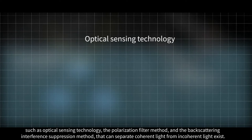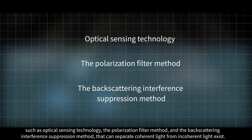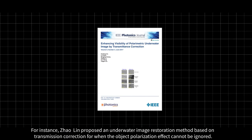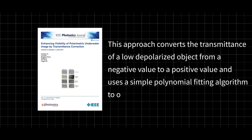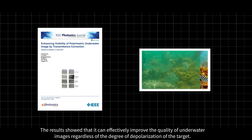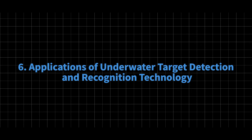At present, several methods such as optical sensing technology, the polarization filter method, and the backscattering interference suppression method that can separate coherent light from incoherent light exist. For instance, Zhao Lin proposed an underwater image restoration method based on transmission correction for when the object polarization effect cannot be ignored. This approach converts the transmittance of a low-depolarized object from a negative value to a positive value and uses a simple polynomial fitting algorithm to optimize the image quality. The results showed that it can effectively improve the quality of underwater images, regardless of the degree of depolarization of the target.